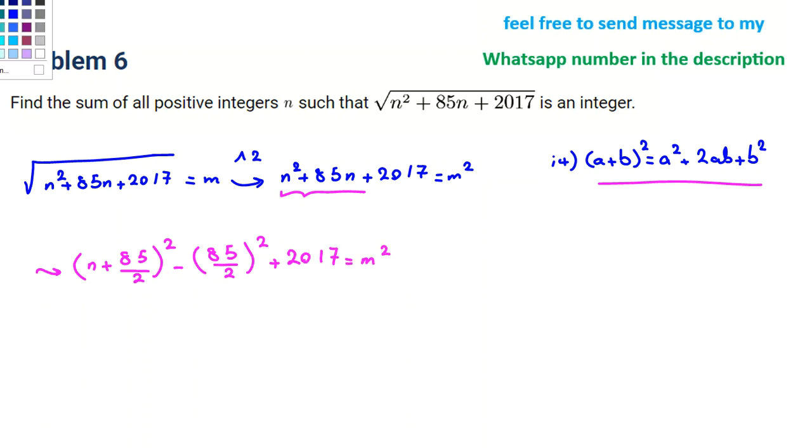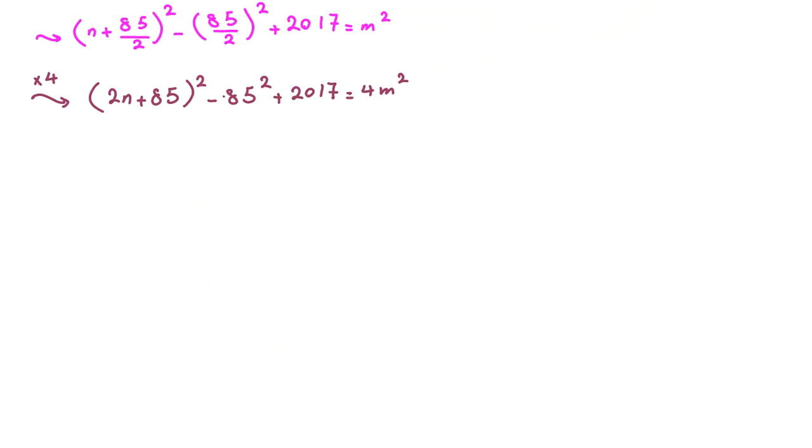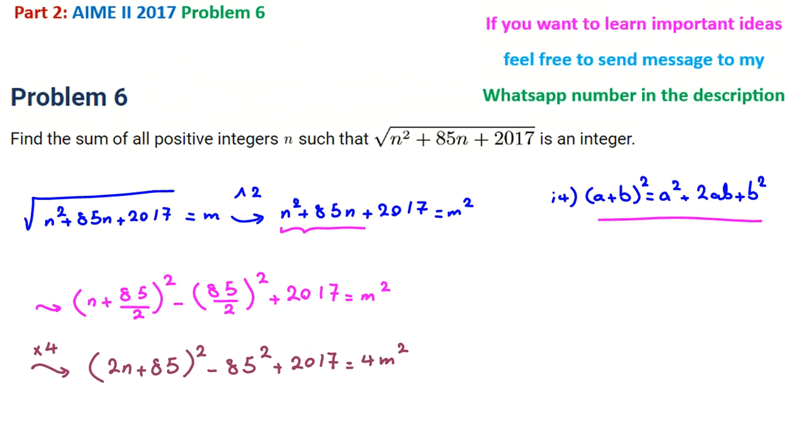Now we don't like denominators when we are working with integers. So we should multiply both sides by 4 to get rid of denominators. So it will be 2n plus 85 squared minus 85 squared plus 4 times 2017 equals 4m squared.